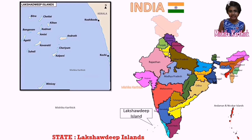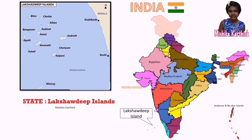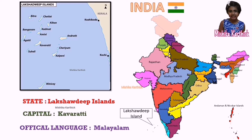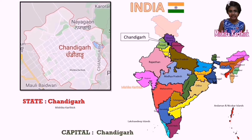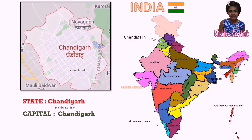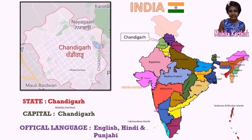Lakshadweep, capital Kavaratti, language Malayalam. Chandigarh — the capital is Chandigarh itself, because it is both a city and a union territory. Language: English, Hindi, Punjabi.